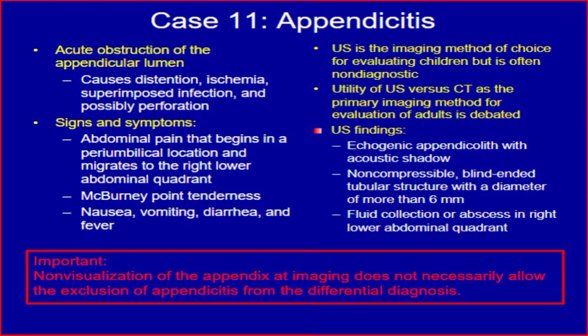Signs and symptoms include abdominal pain that begins in a periumbilical location and migrates to the right lower abdominal quadrant, McBurney's point tenderness, nausea, vomiting, diarrhea, and fever. Ultrasound is the imaging method of choice for evaluating children but is often non-diagnostic.